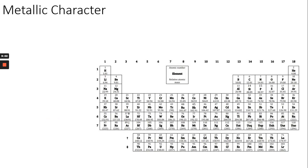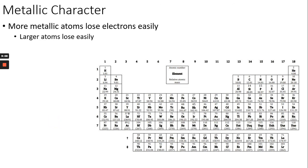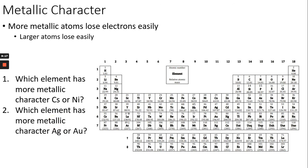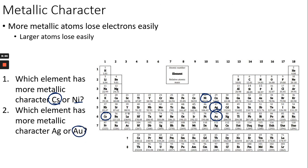Metallic character describes how metal-like an element is. Metallic atoms lose electrons easily, so the larger the atom, the easier it is to lose electrons and the more metallic the character. For example: cesium or nickel — the larger one is cesium, so cesium has more metallic character. Silver or gold — the larger atom has more metallic character because it's easier to lose the electron, so the answer is gold.